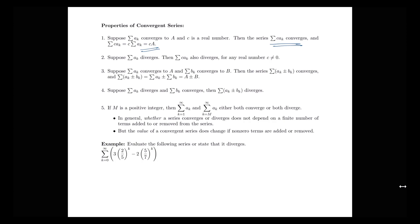We can also say that if we have a sum of ak that diverges, multiplying each term by a constant c and adding them all up won't change the convergence or divergence. So the sum of c times ak will also diverge for any real number c.